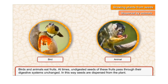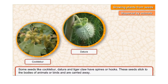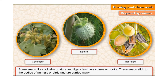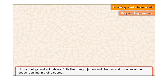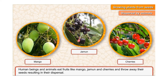Dispersal by animals: Birds and animals eat fruits. At times, undigested seeds of these fruits pass through their digestive systems unchanged, and in this way seeds are dispersed from the plant. Some seeds like cocklebur, toora, and tiger claws have spines or hooks that stick to the bodies of animals or birds and are carried away. Human beings and animals also eat fruits like mango, jamun, and cherries and throw away their seeds, resulting in their dispersal.